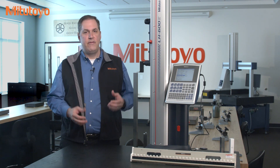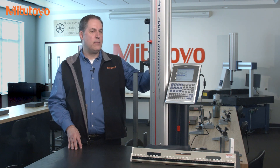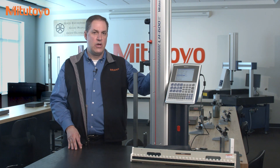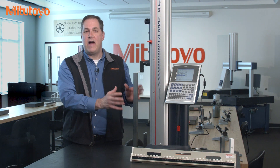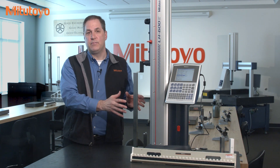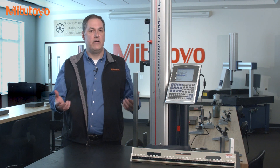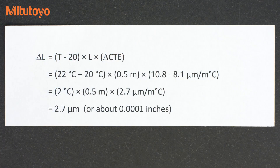Now, just as an example, let's do a simple calculation to see what happens if we were to calibrate this linear height gauge using a 500 millimeter — or about 20 inch — steel gauge block in a typical office environment around 22 degrees Celsius.